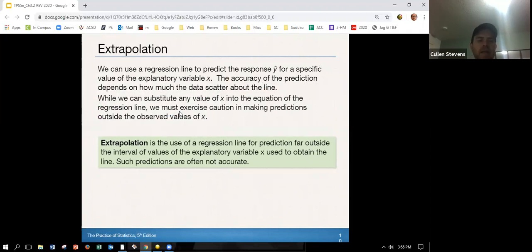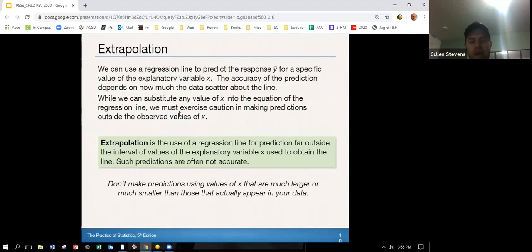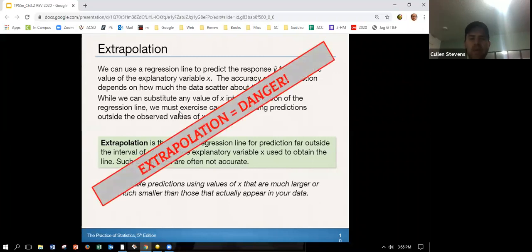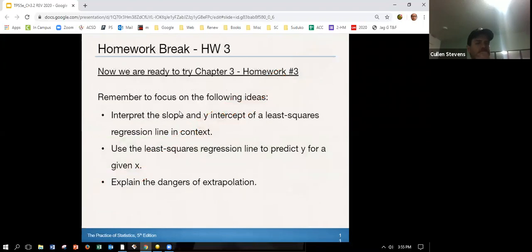So extrapolation is the use of the regression line for prediction far outside the interval of values of explanatory variable x used to obtain the line. Such predictions are often not accurate. And I would even go as far as saying don't make predictions using values of x that are much larger or much smaller than those that can actually appear in the data. And we'll just go as far to say extrapolation equals danger. Let's do that right now. Extrapolation equals danger. Okay, don't be dangerous. I know some of you saying that extrapolation is your middle name, but not here, not in stats. Okay, use caution.